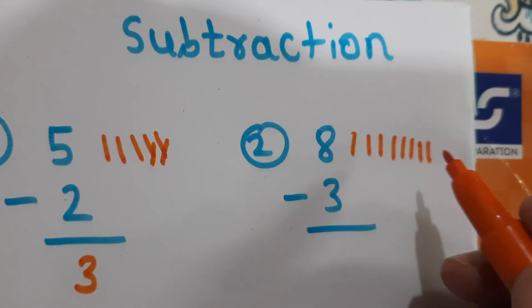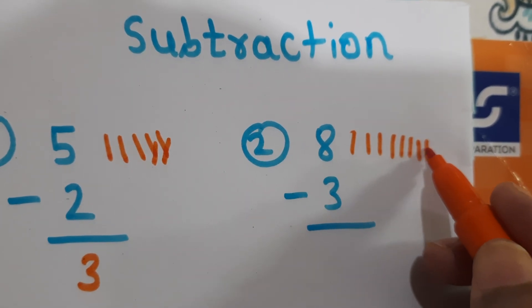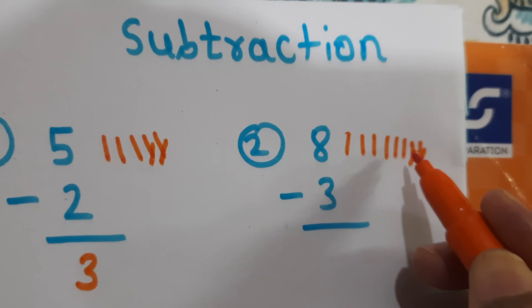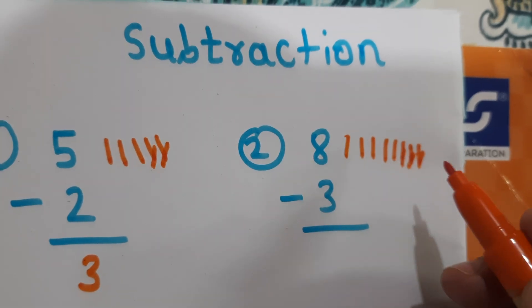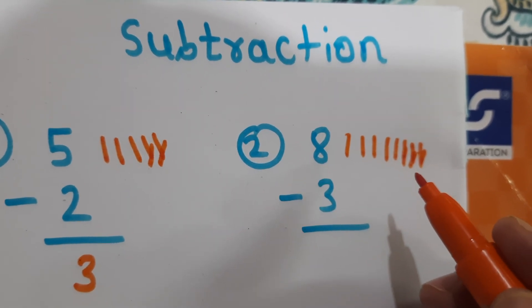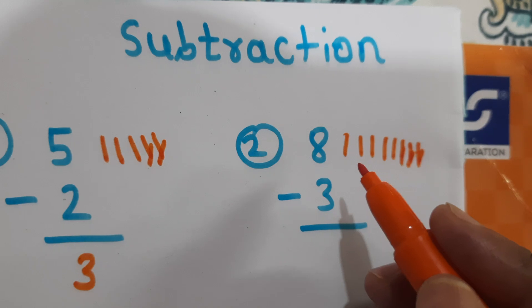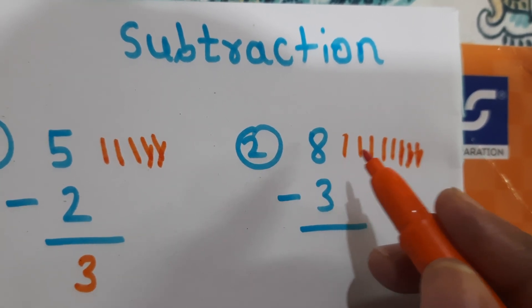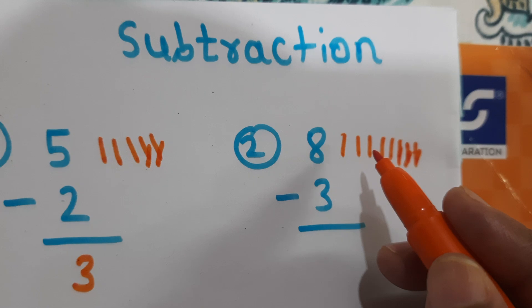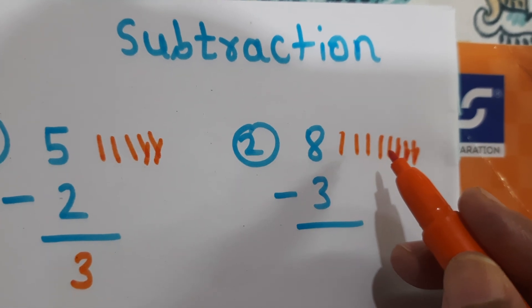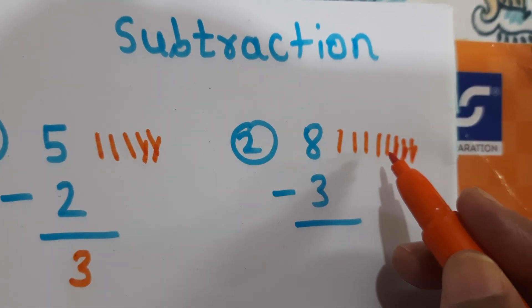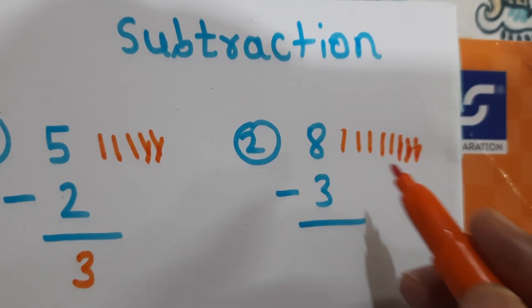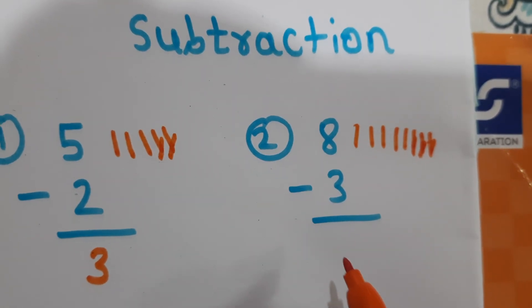Minus 3, so we cut 3 lines: 1, 2, 3. So, what is the answer? 1, 2, 3, 4, 5. 5 lines are remaining. So, answer is 5.